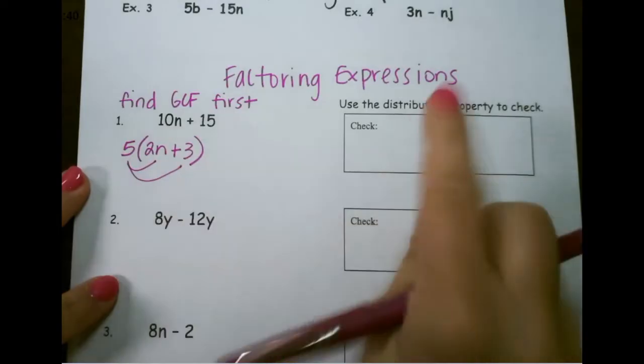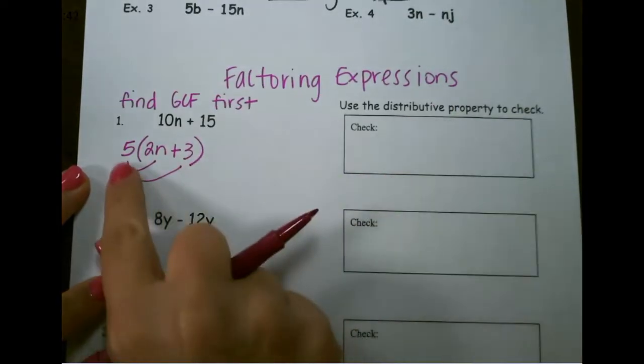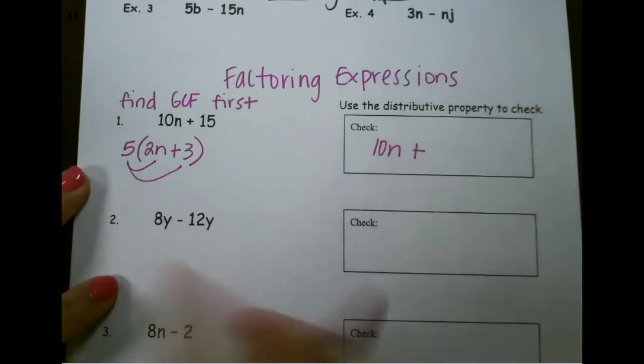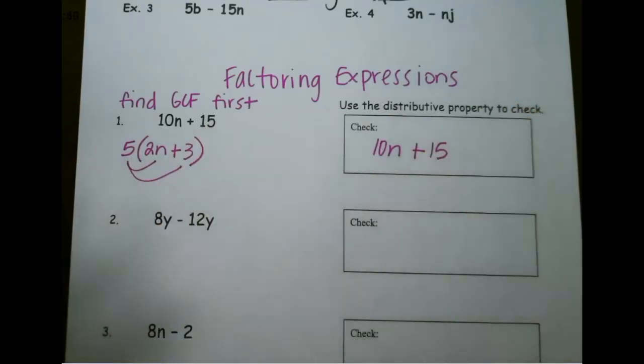And then you can check your answer by using distributive property. 5 times 2n is 10n, 5 times 3 is 15.